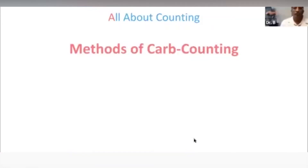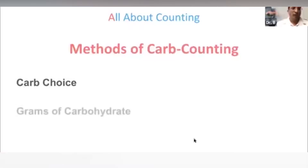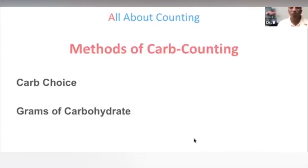There are two ways we count carbs, and it gets confusing, so I want to make sure this is understandable. First is a carb choice, or carb serving — sometimes we just say 'carb,' as in 'I ate three carbs for lunch.' That's a carb choice. More recently, we also use grams of carbohydrates, for example, 'my milk had 15 grams of carb.' How do these two relate — does anyone know how many grams of carbohydrate are in each carb choice?